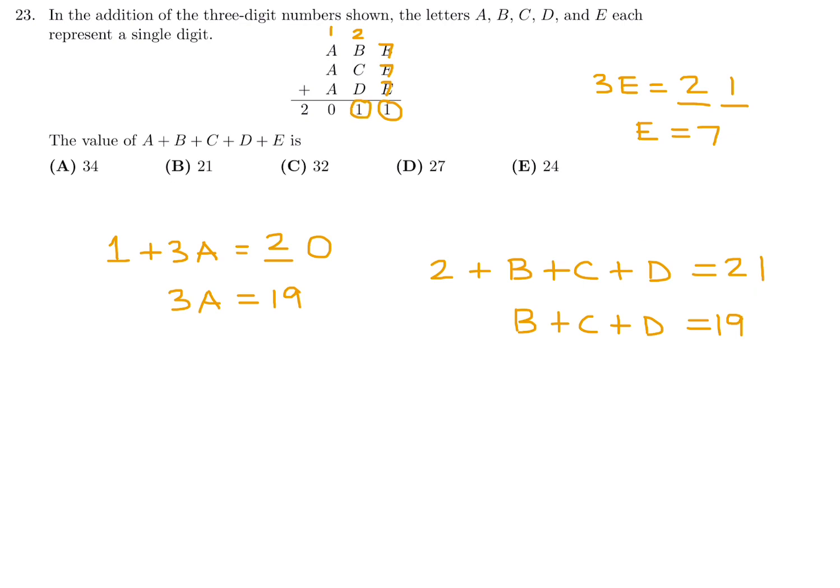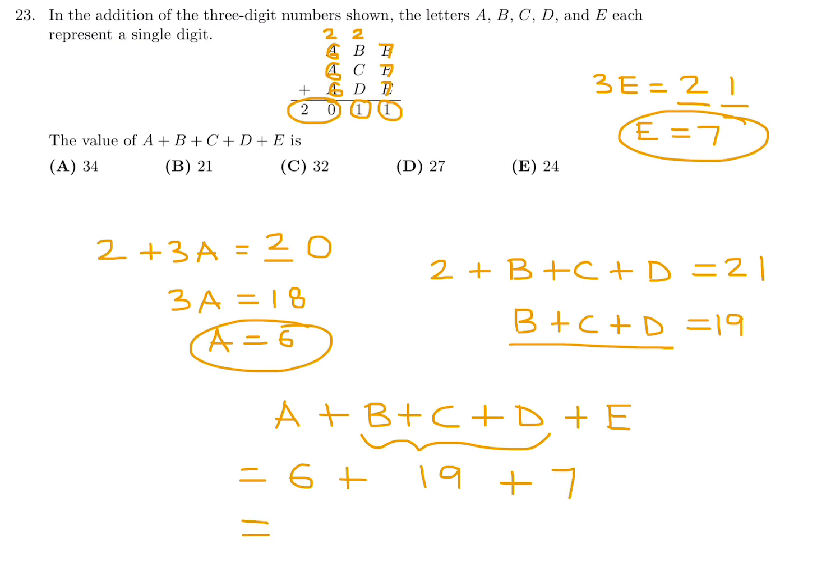So now I go back to this equation. It's now 2 plus 3A. And this is fixed as 20. Now we've got 3A is equal to 18. And that will give me an integer solution for A. It will give me 6. So this is 6, this is 6, and this is 6. And interestingly, I don't really need to know the individual values for B, C, and D, because they want me to figure out A plus B plus C plus D plus E.